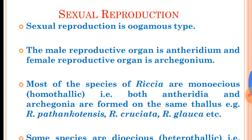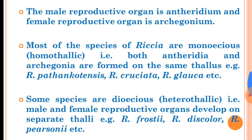Now, sexual reproduction in Riccia. Sexual reproduction is oogamous type. The male reproductive organ is the antheridium and the female reproductive organ is the archegonium. Most species of Riccia are monoecious — that is, both male and female reproductive structures are formed on the same thallus, and such species are known as homothallic. For example, Riccia pathankotensis, Riccia cruciata, Riccia glauca, etc.